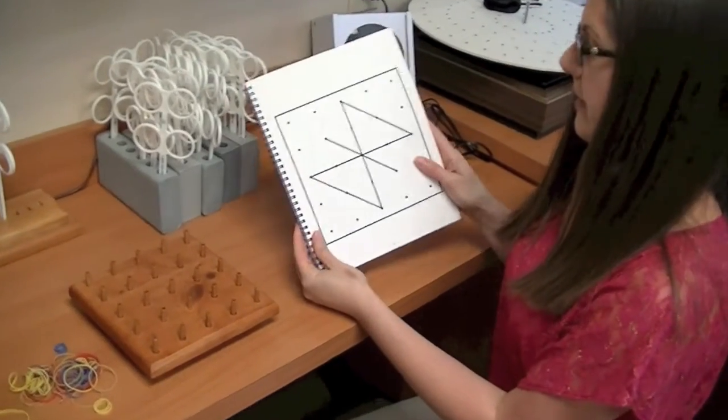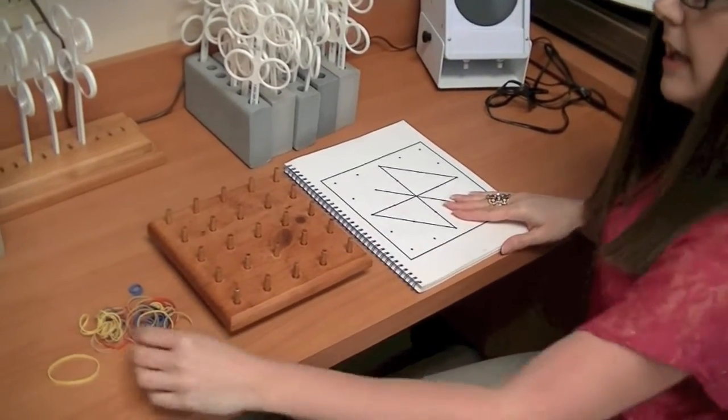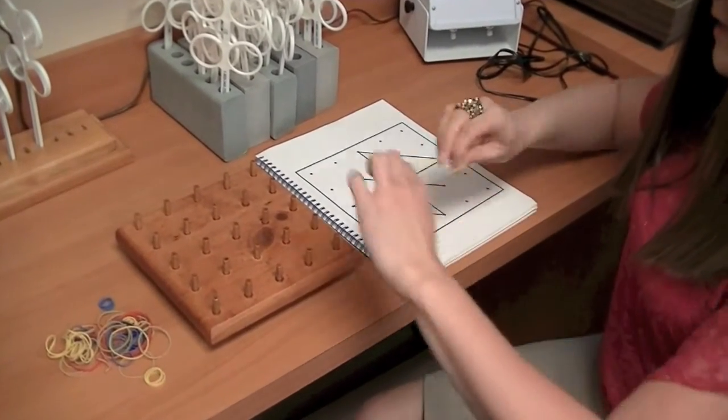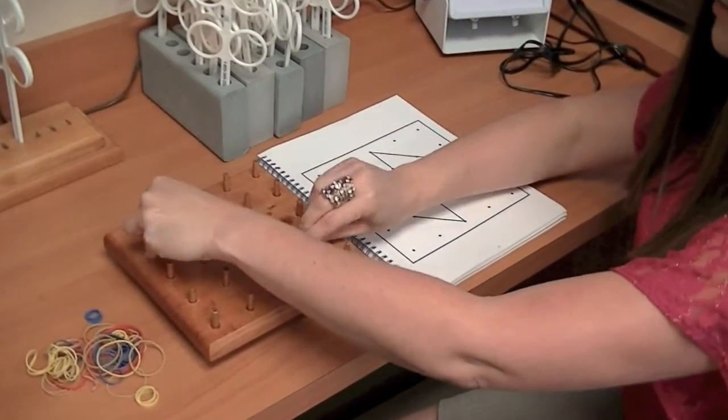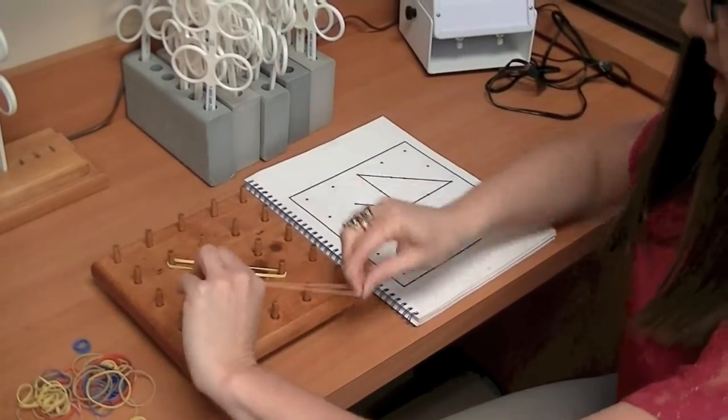We use a book—there are a couple of these actually—to train our patients, and they use rubber bands. What they have to do is follow the pattern that the book shows them and make it on the geoboard. So I'll try to do this really fast here.